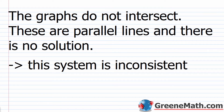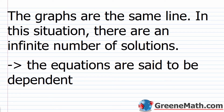One special case is when the graphs do not intersect because the lines are parallel. Parallel lines do not intersect by definition, so there is no point on both lines and therefore no solution for the system. This system is called inconsistent. The other special case is when the graphs are the same line — there are then an infinite number of solutions.